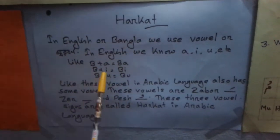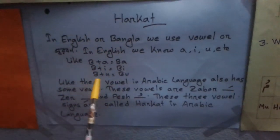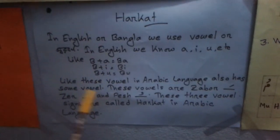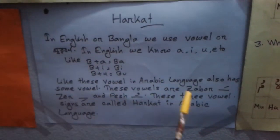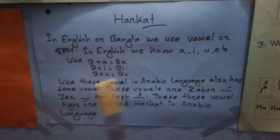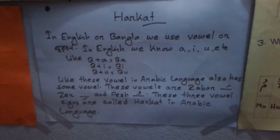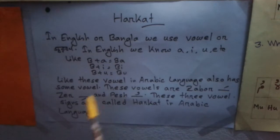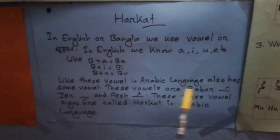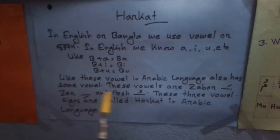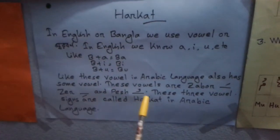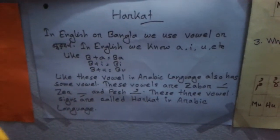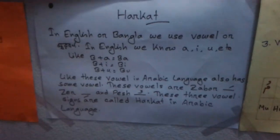For example, B plus A gives BA, B plus I gives BI, B plus U gives BU. Like this, the Arabic language also has vowels. These vowels are Zawur, Zayr, and Pesh. These 3 vowel signs are called Harkat in Arabic language.